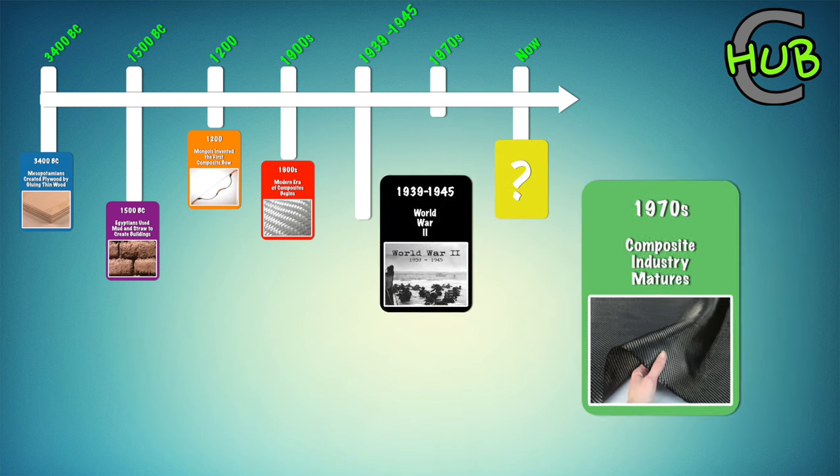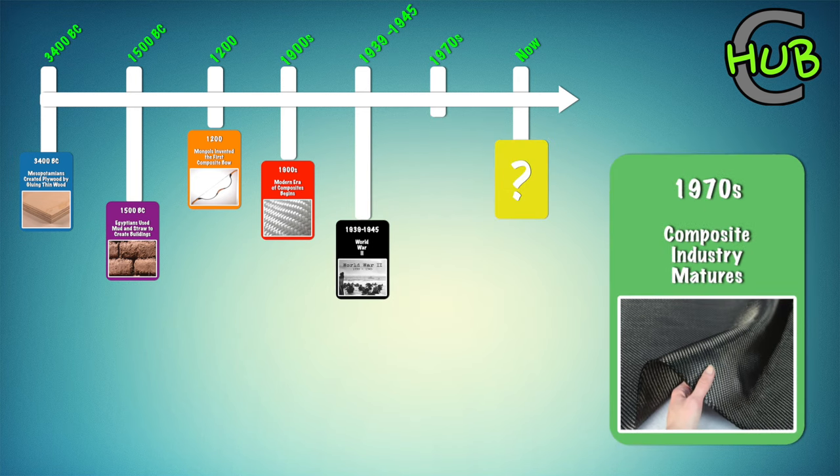In the 1970s, the composite industry began to mature. Better plastic matrices and reinforcing fibers such as carbon fiber were developed, which has since been replacing metal as the new material of choice.